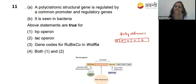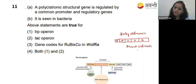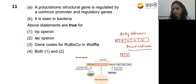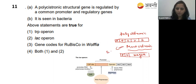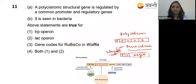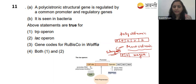Cistron means gene. In contrast, monocystronic genes are seen in eukaryotes, where a single promoter controls only one gene. Both statements about polycystronic structural genes regulated by common promoter and regulatory gene are correct. Statement one is correct.